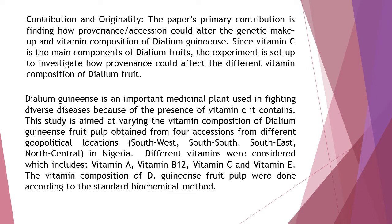This study is aimed at varying the vitamin composition of Dialium guineense fruit pulp obtained from four accessions from different geopolitical locations — southwest, south-south, southeast, and north-central — in Nigeria. Different vitamins were considered, which includes vitamin A, vitamin B12, vitamin C, and vitamin E.